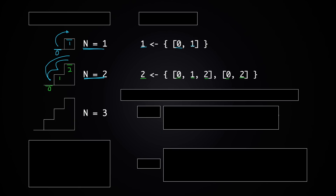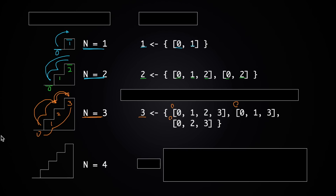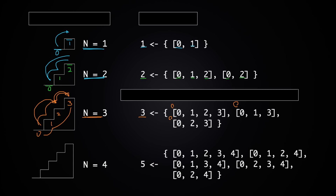When n equals 3, labeling the stairs 0, 1, 2, and 3, we find three paths: 0→1→2→3, then 0→1→3, and then 0→2→3. So num_ways should return 3 for n=3. Similarly, for n=4, you'll find there are five paths. Now the question is: can you find any pattern in what we've found so far?